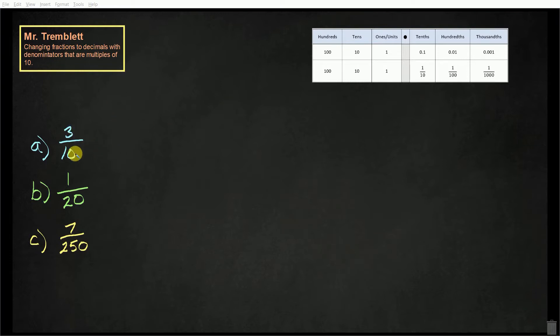In the first one, we have 3 tenths. So when we read that, we actually call it 3 tenths. If we look at our place values, we do have a tenths place value. It's the number that comes after the decimal. We're just saying we have 3 of those, 3 tenths.